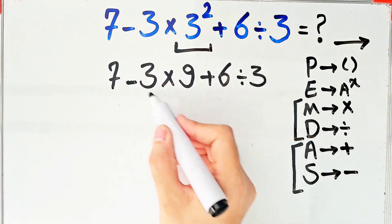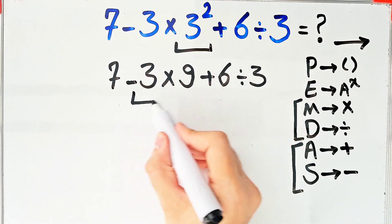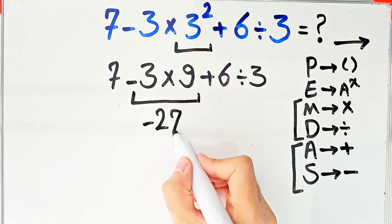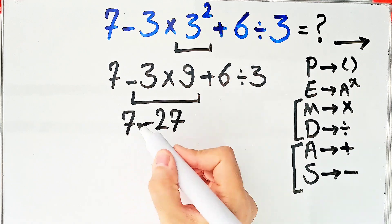First we do this multiplication. Negative three times nine equals negative twenty-seven. Now we have seven minus twenty-seven plus six divided by three.